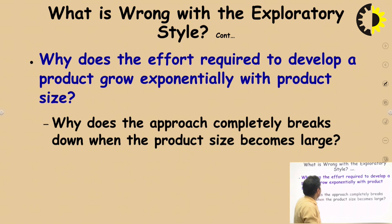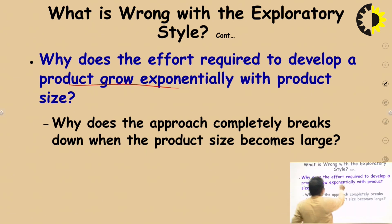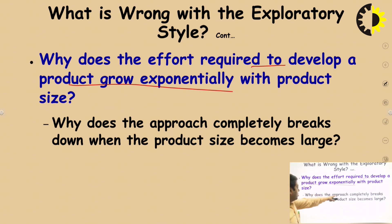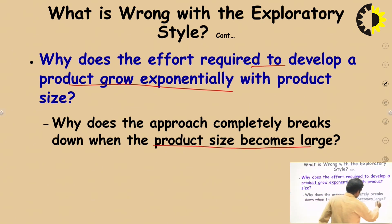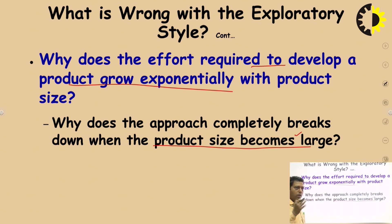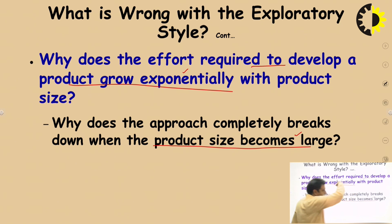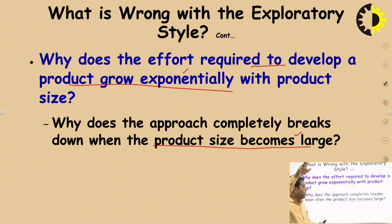Why do the efforts required to develop a product grow exponentially? As your product size increases, the exploratory style of software development breaks down. The efforts, cost, and time required will exponentially increase. The approach completely breaks down when the product size becomes large — the three factors of efforts, cost, and time all exponentially increase with project size.